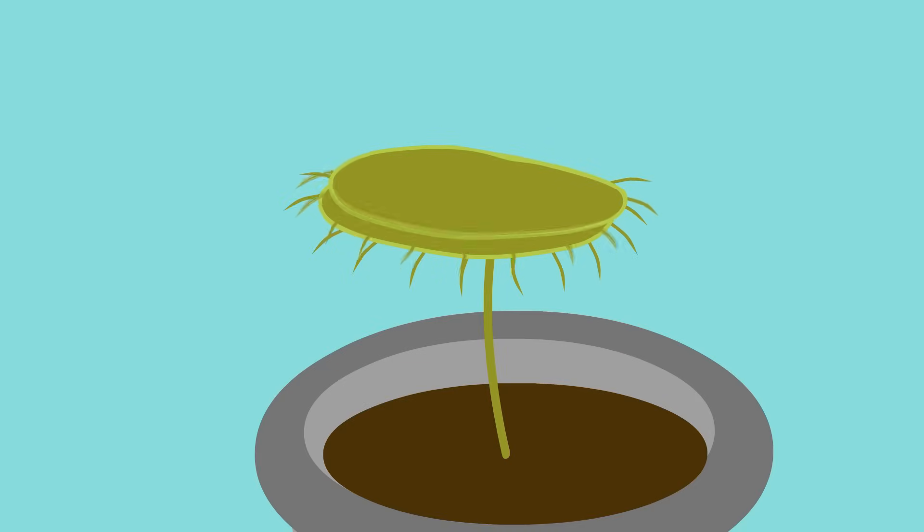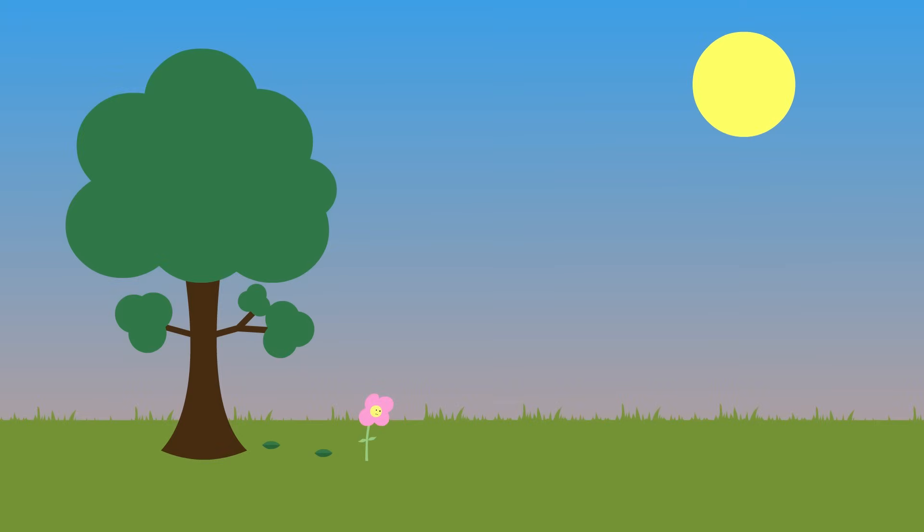Green plants are called producers or autotrophs because they have the ability to produce their own food. They are the start of the food chain and every animal relies upon them either directly if they are a herbivore like a rabbit, or indirectly if they are a carnivore like a fox.